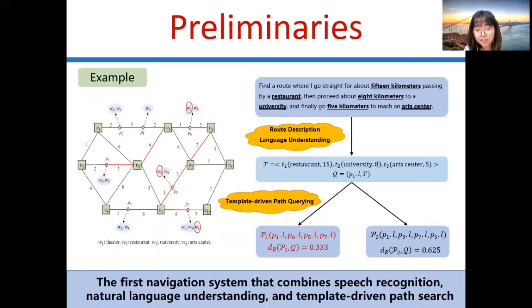For example, as mentioned above, assume the user starts from the first POI. Route description language understanding extracts the template sequence T: restaurant 15, university 8, art center 5. According to the road network on the left, SpeakNav will retrieve two candidate paths.